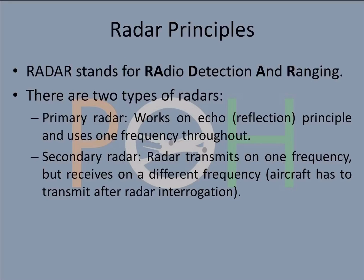RADAR stands for RAdio Detection And Ranging. There are two types of radars that are majorly used. One is the primary radar, which works on echo principle, also called reflection principle, and uses one frequency throughout. What really happens is the radar emits electromagnetic radiation. That radiation bounces off an object, it reflects back and comes back to the radar, which receives it and then prints it on a screen.